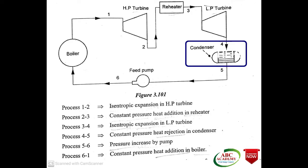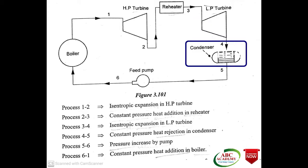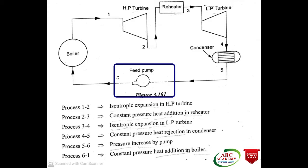Then the expanded steam will pass on to the condenser. In the condenser, condensation takes place under constant pressure. The condensed liquid plus vapor will exit from the condenser and will be fed into the boiler with the help of the feed pump. This completes the reheat Rankine cycle.